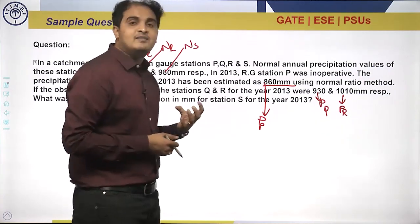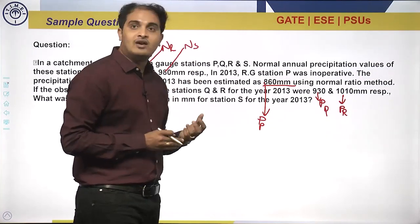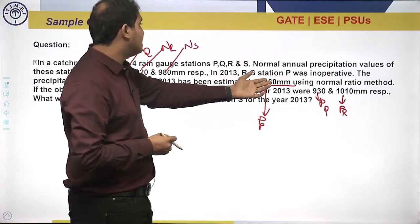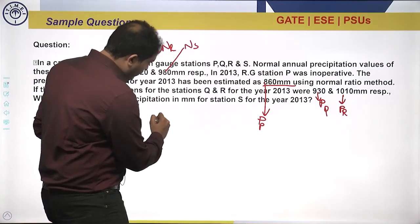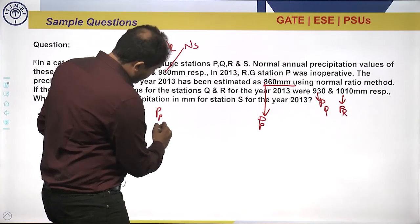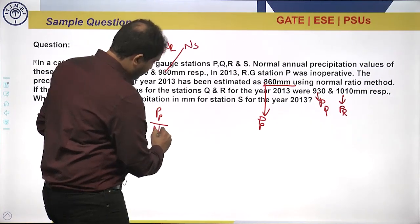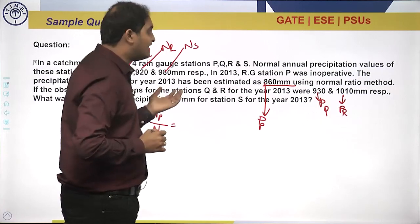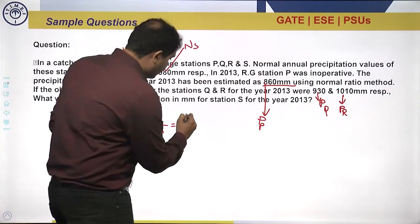Now, what is the missing rain gauge? The inoperative rain gauge was P. Therefore, we need to use the normal ratio formula: P_P divided by NP equals a weighted average. Other than P, we have three other rain gauge stations: Q, R, and S.